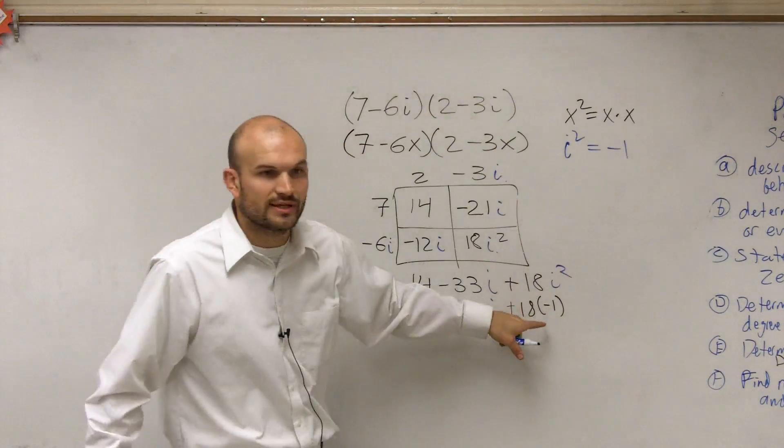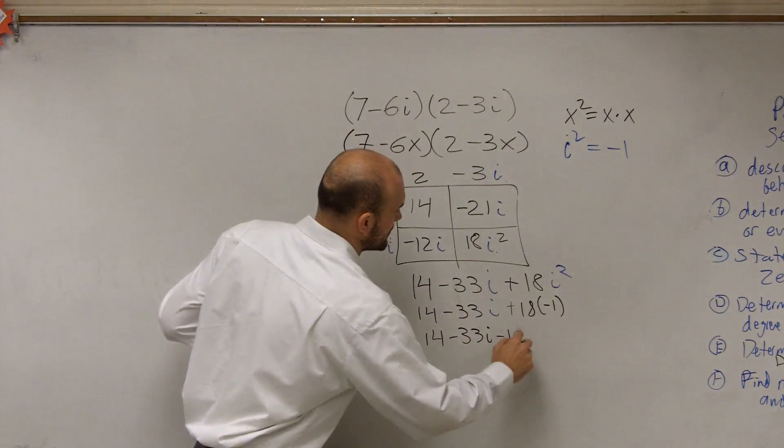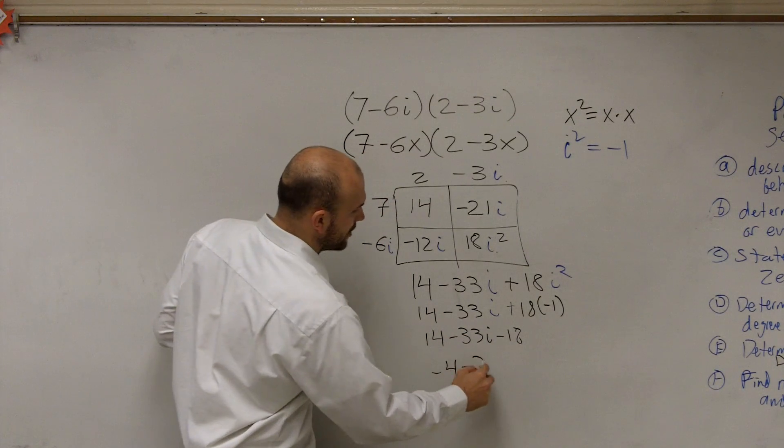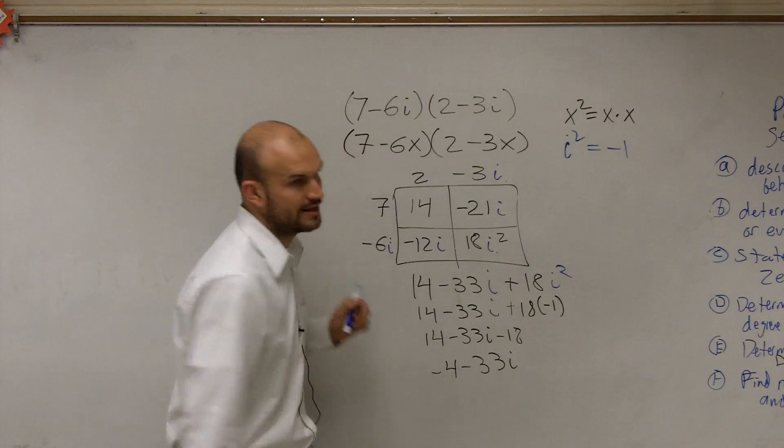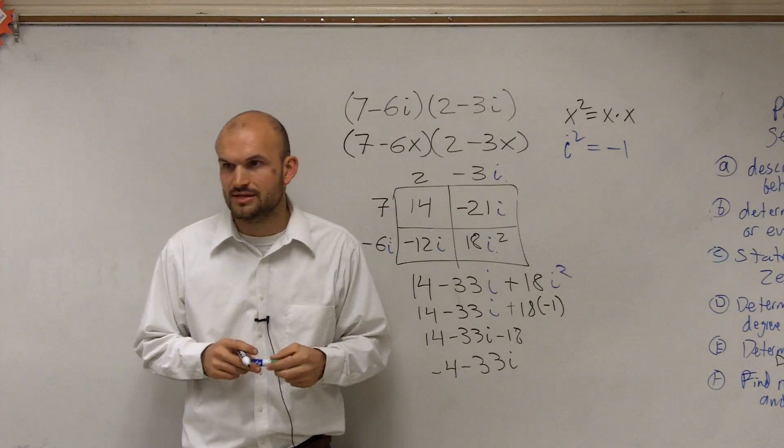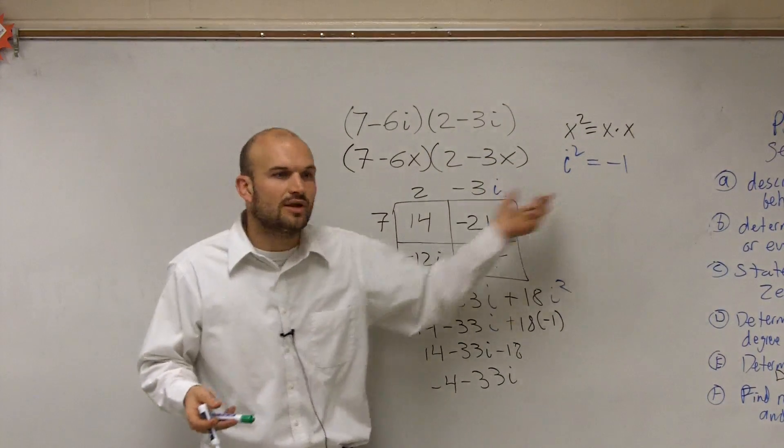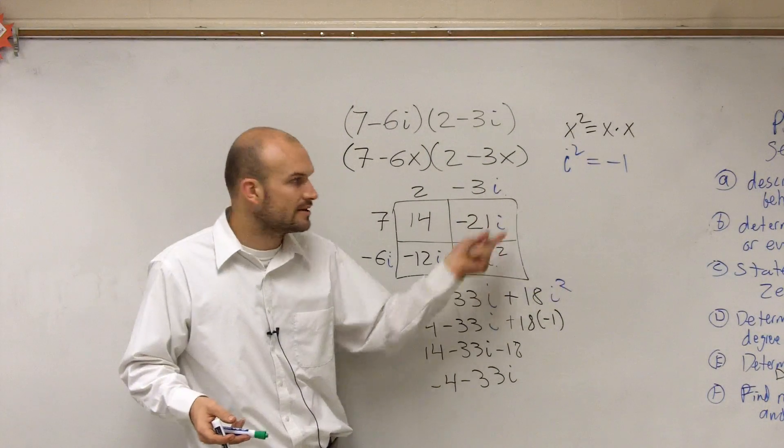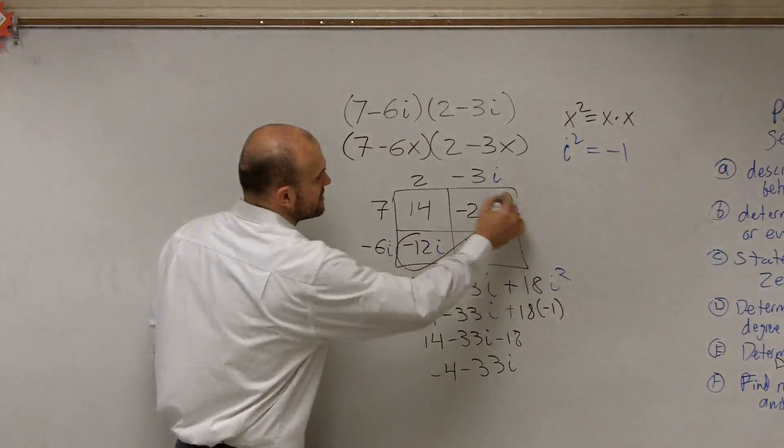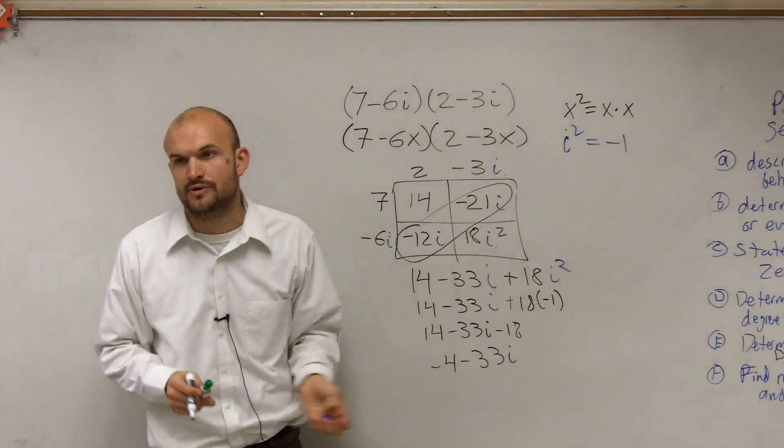So therefore, this is really a minus 18. 14 minus 33i minus 18. And therefore, you can see my final answer is negative 4 minus 33i. Does that kind of make a little sense? The only real difference, I'm saying it's the same thing when using variables, the only difference is you just plug in your i. But when you get i squared, you're going to incorporate that for negative 1. And it's also important to see that your cross terms, those combine to give you that negative 33i.